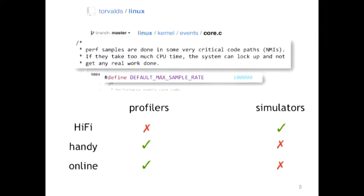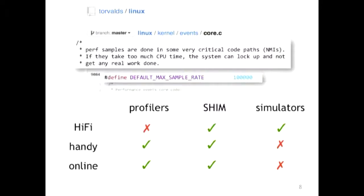At a computer architecture conference, people run their programs — say a two-second benchmark — and have to run for one week to get results, because the CPU is running on gigahertz. They get very high-fidelity information and know what happens on every cycle, but you don't want to wait two weeks for a two-second benchmark. So we try to make a tool that lets you collect high-fidelity information that is handy enough to use online and even run on production systems forever.